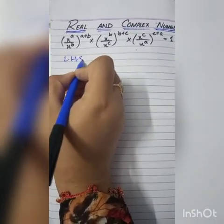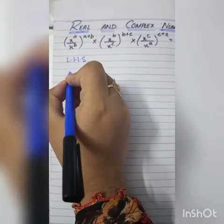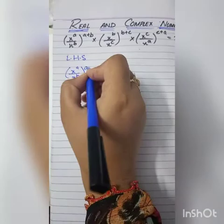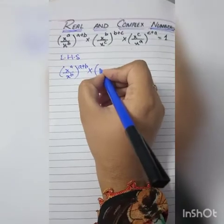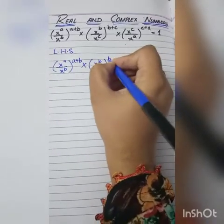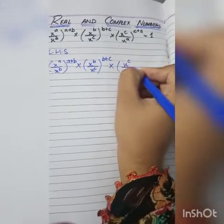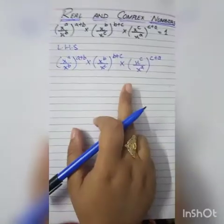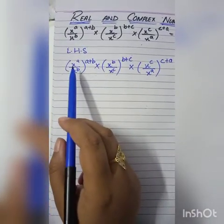So first we write down left hand side. We have to take this left hand side and prove it. We take the left hand side and put the multiplication sign. Then we have to write what we have here. We mention x^b over x^c to the power b+c, then multiplication sign, then x^c over x^a to the full power. Now we will solve it.